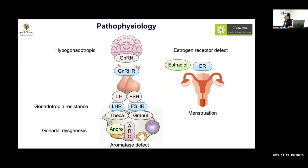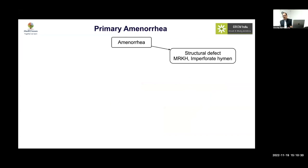XY DSD is basically an act of omission, while XX DSD is an act of commission. Any gene defect in XY individuals that prevents testicular development leads to normal female development — associated with tall stature as discussed. If there is an FSH receptor problem, pubertal development will be significantly impaired. Aromatase abnormalities cause atypical genitalia at birth followed by primary amenorrhea. Structural defects like Müllerian abnormalities or imperforate hymen can also cause primary amenorrhea — the latter being easy to identify but often missed.